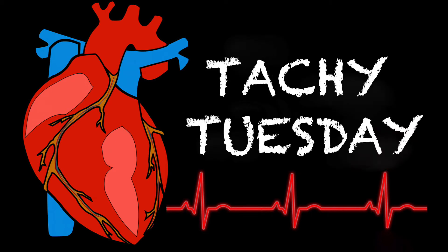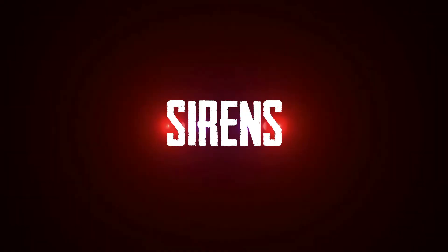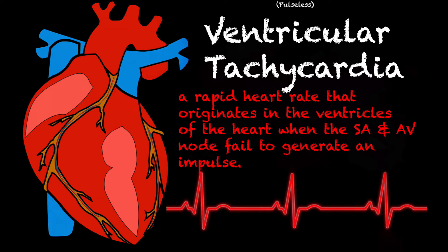Hey everyone and welcome back to another episode of Tacky Tuesday. Today we're going to be going over pulseless ventricular tachycardia. Ventricular tachycardia is a rapid heart rate that originates in the ventricles of the heart when the SA node and the AV node fail to generate an impulse. Basically, the ventricles are pumping so quickly that the typical amount of blood ejected during each heartbeat is absent — and that's where we get the term pulseless ventricular tachycardia.